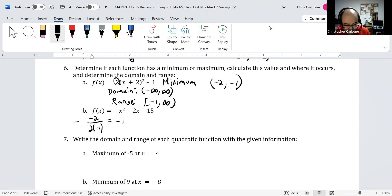And if you put -1 into this function, so -(-1)² - 2(-1) - 15, we get -14 back.